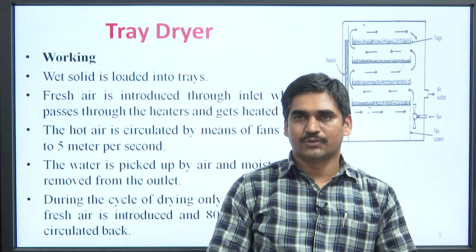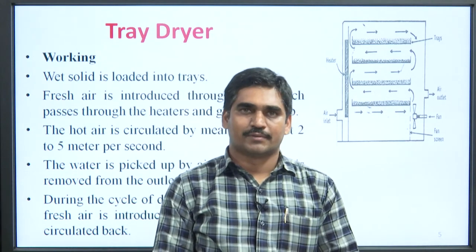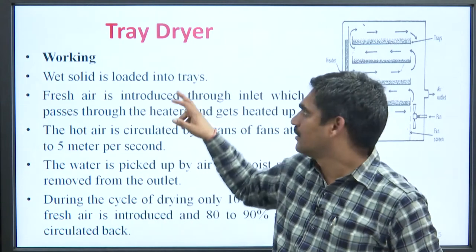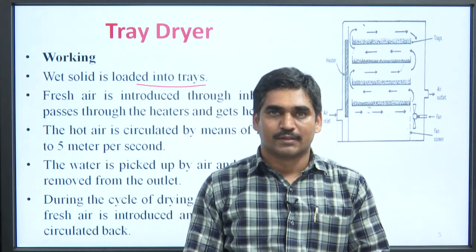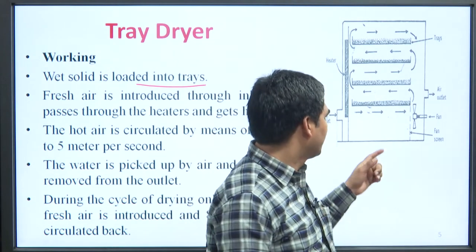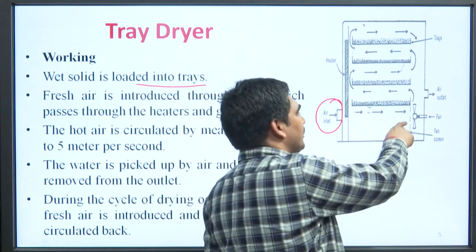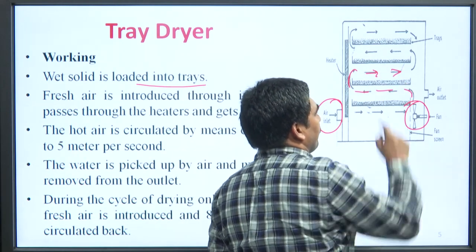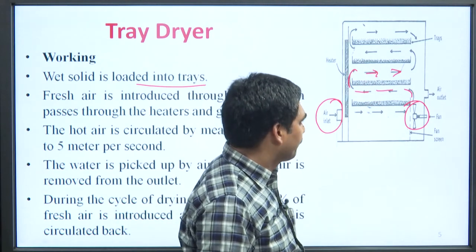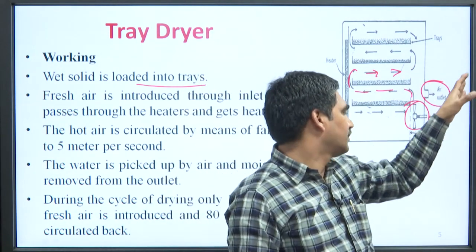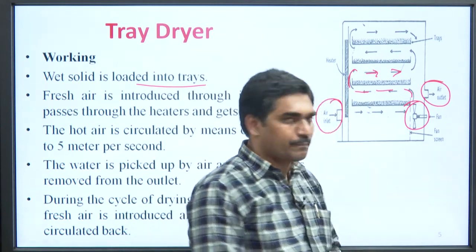Working of the tray dryer: first, wet solid to be dried is loaded into the trays. Then fresh air is introduced through the inlet. As seen in the diagram, the air inlet allows fresh air into the chamber. A fan attached to the dryer circulates this fresh air. There is also an air outlet through which heated air containing moisture exits the chamber.